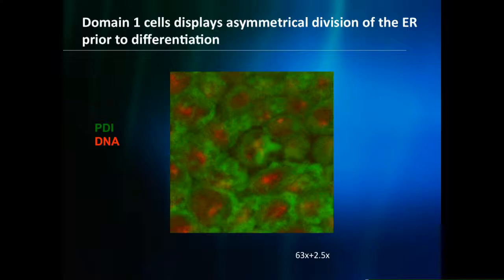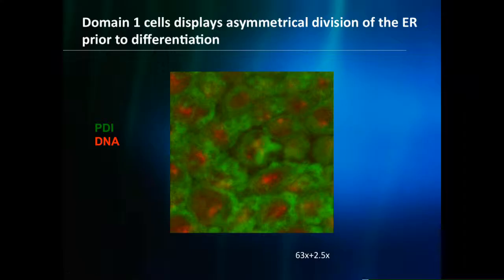My student came back and said, 'I saw something really odd.' You love it when students say that, because it means it's really cool. He said the ER is not moving correctly. With ER in green and DNA in red, he saw what he described as an unequal partitioning of the ER — one daughter cell is getting more ER than the other.